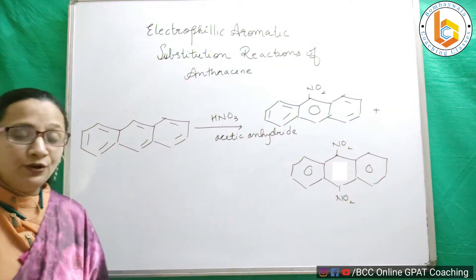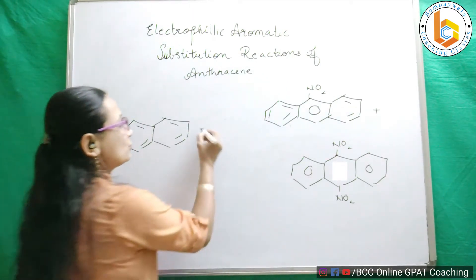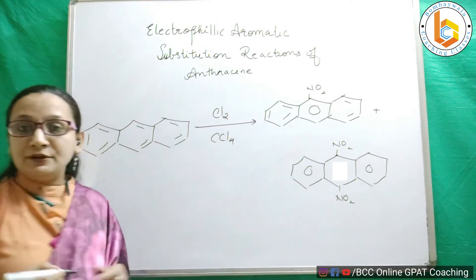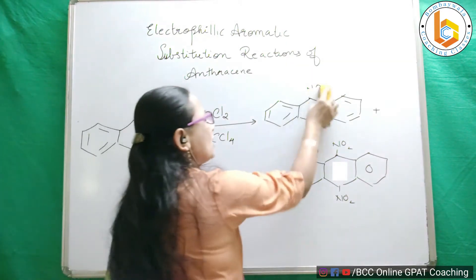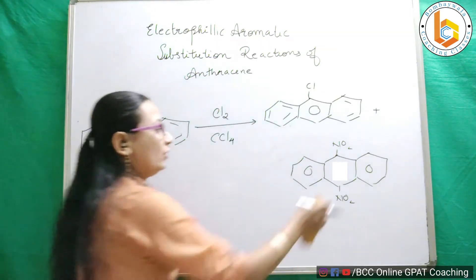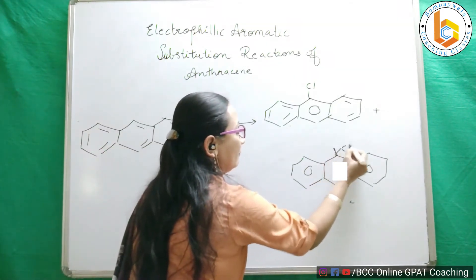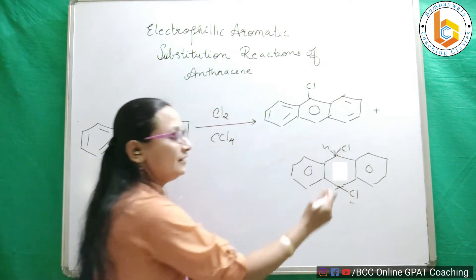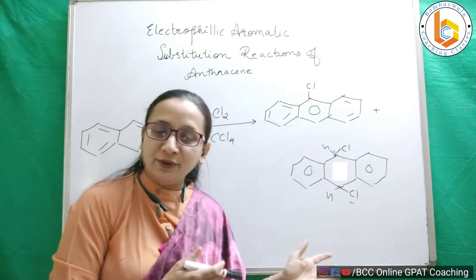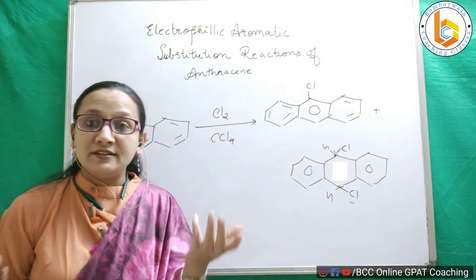Now for halogenation — using Cl₂ in the presence of CCl₄ (carbon tetrachloride) — there is again a chance that I will get 9-chloroanthracene or 9,10-dichloro-dihydroanthracene. Since hydrogen is also involved in the addition product, I label it as 9,10-dichloro-dihydroanthracene. Similarly, the dinitro addition product would be called 9,10-dinitro-dihydroanthracene. This is the second reaction: halogenation.